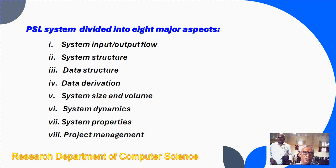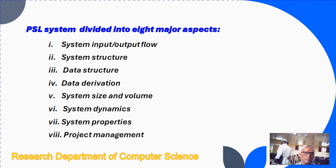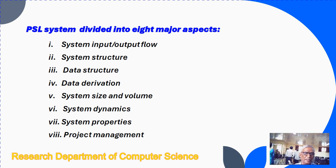The PSL system is divided into eight major aspects: system input-output flow, system structure, data structure, data derivation, system size and volume, system dynamics, system properties, and project management.